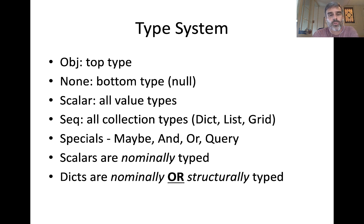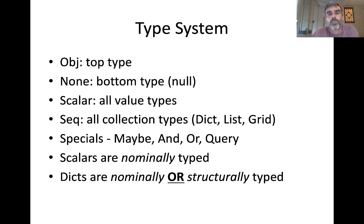Just a quick overview of the type system. The sys library contains the core types. Object is the top type, so everything derives from object. The bottom type is none, which we use where you might use null in programming languages. Everything else is one of two types: a derivative of the scalar type or a derivative of the sequence type. All atomic values are scalars — strings, numbers, URIs, dates, date times, etc. Sequences are your collection types: dictionaries, lists, grids.